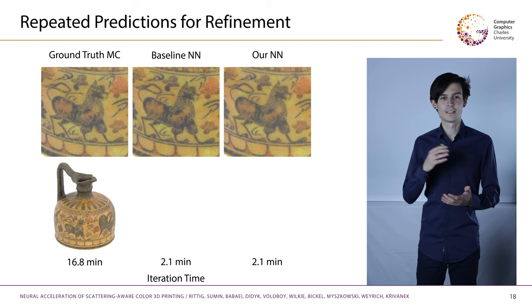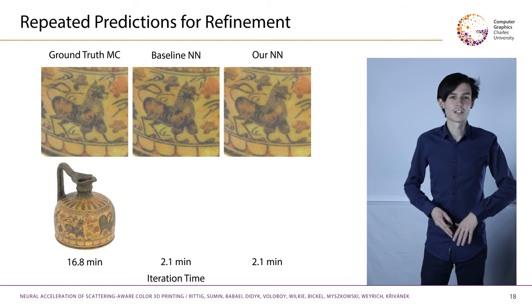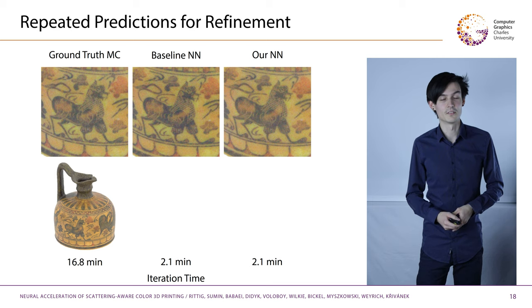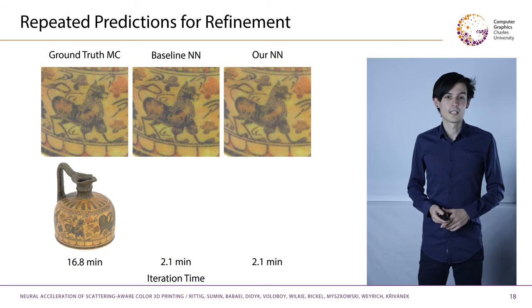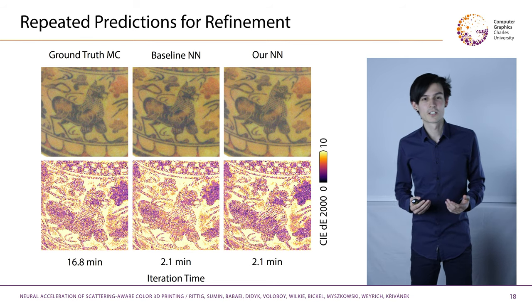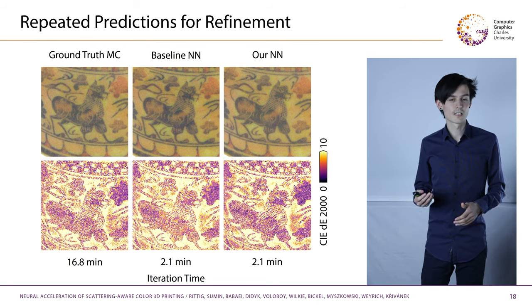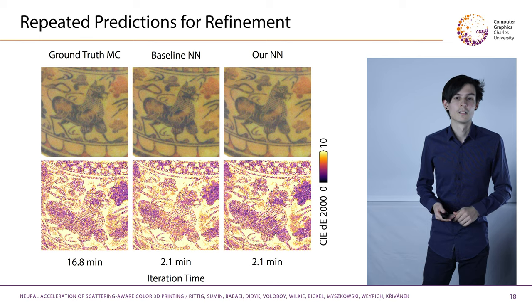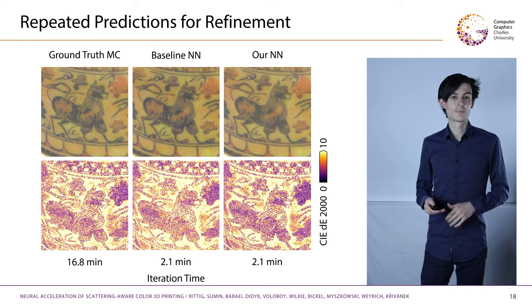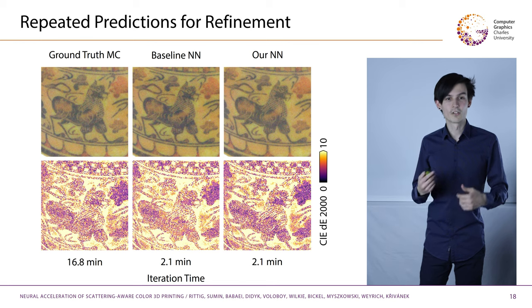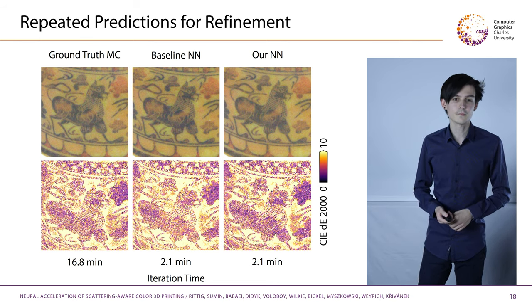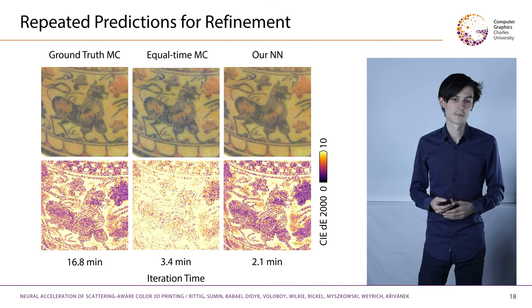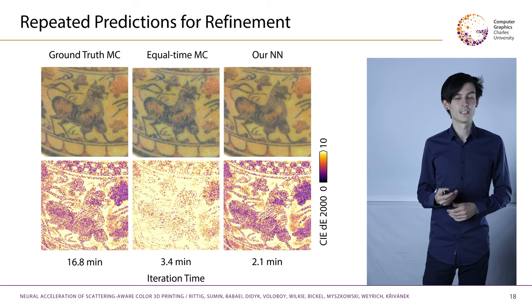Now let's look at the neural predictor inside an iterative optimization loop, where any potential bias would add up over multiple iterations and manifest in the final appearance. Again, the quality between ours and Monte Carlo matches very well. If we look at the difference images against the target, our network even produces a slightly better match in some areas. For the baseline network, the blacks are underestimated, resulting in over-darkening of the optimization. When we compare against the Monte Carlo solution using the same runtime as ours, you can visually see the reduced quality in the detail.